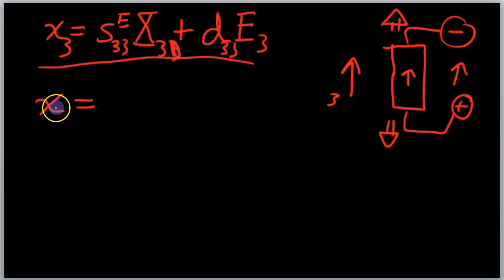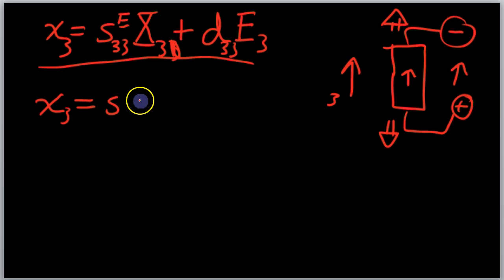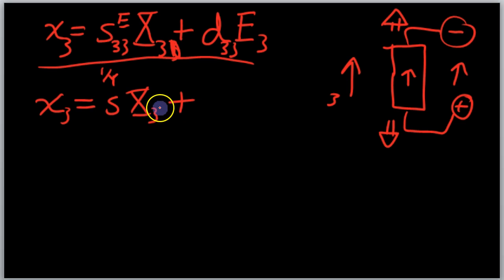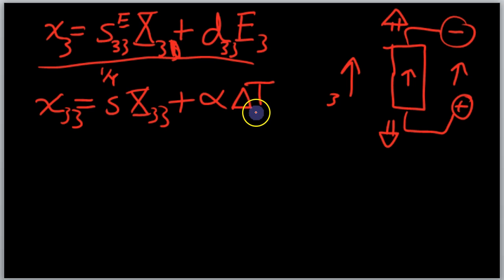The strain in the 3 direction for the thermal case will have the same form. There's going to be some compliance — and to remind you, compliance is 1 over the Young's modulus or the bulk modulus. So we have the compliance and some stress applied; obviously for any material, you apply a stress and you'll get some strain according to its compliance. And now we add a thermal expansion coefficient: a change in temperature results in a change in strain. This looks very similar to our piezoelectric equation.